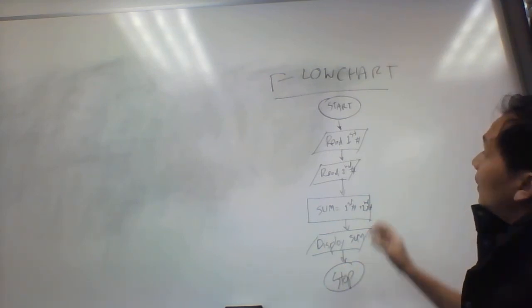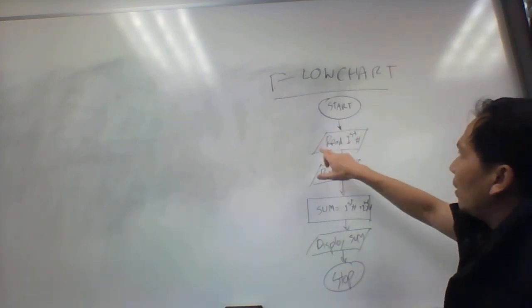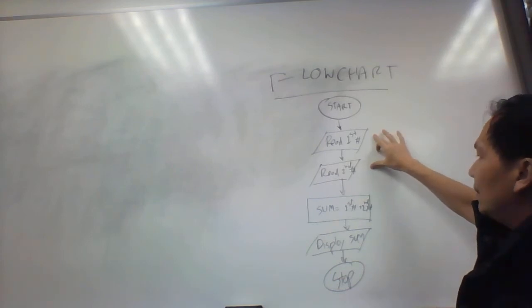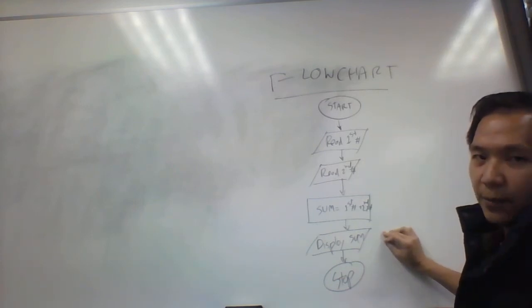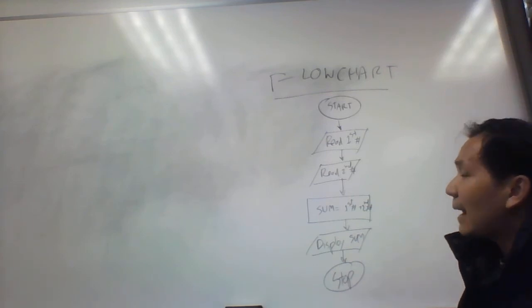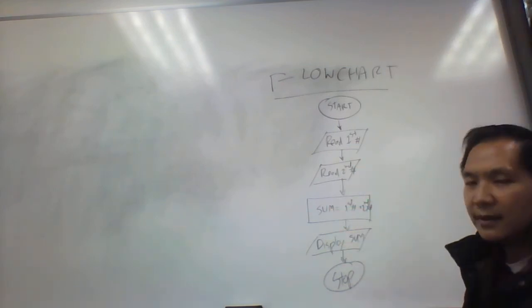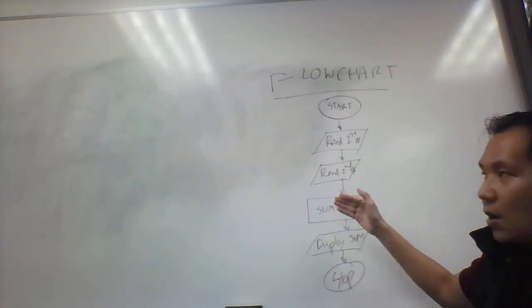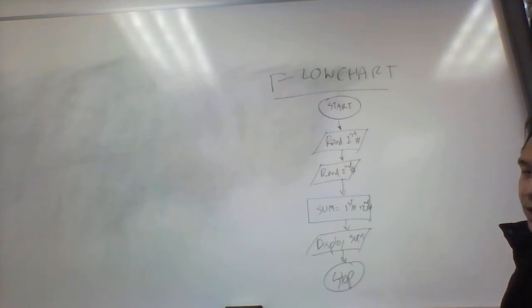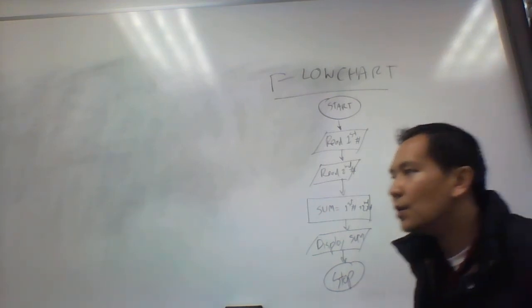Let's recap this one more time. We use an oval to get the start point and end point. We use the parallelogram for reading input and display output, and we use rectangle to do the process. The main application - when you write an application, we technically want to read input, process it, and give the output to the user. This is called flowchart, and the discussion topic wants you to discuss the difference between flowchart and pseudocode.